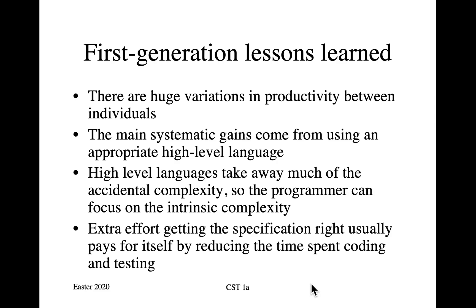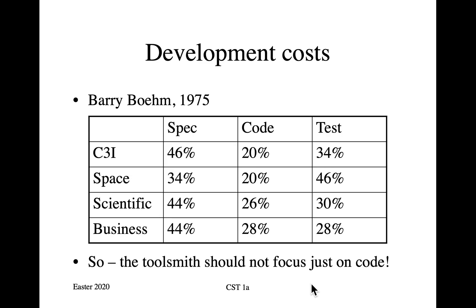The next lesson is that extra effort put into getting the specification right usually pays for itself by reducing time spent coding and testing. In 1975, Barry Boehm, a pioneer of software engineering economics, collected data on this. For Pentagon command, control, communications and intelligence systems, the specification was almost half of the work, code was about a fifth of the total project value, and testing was the rest — about a third.